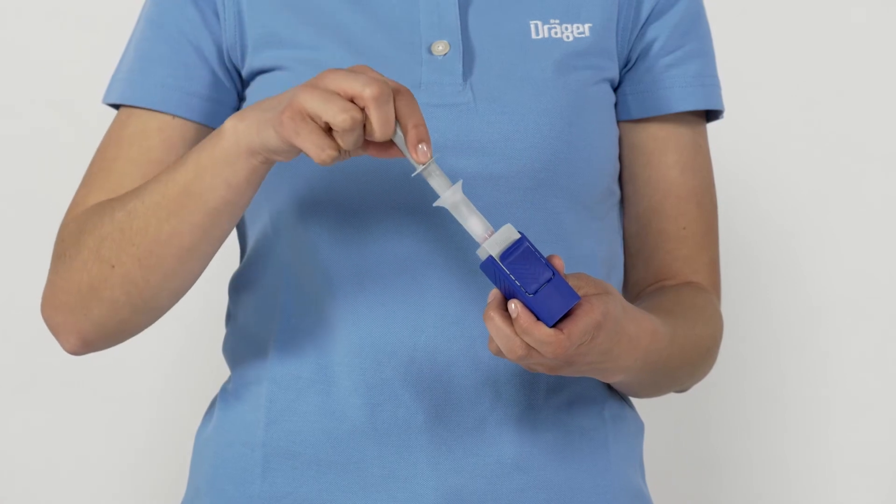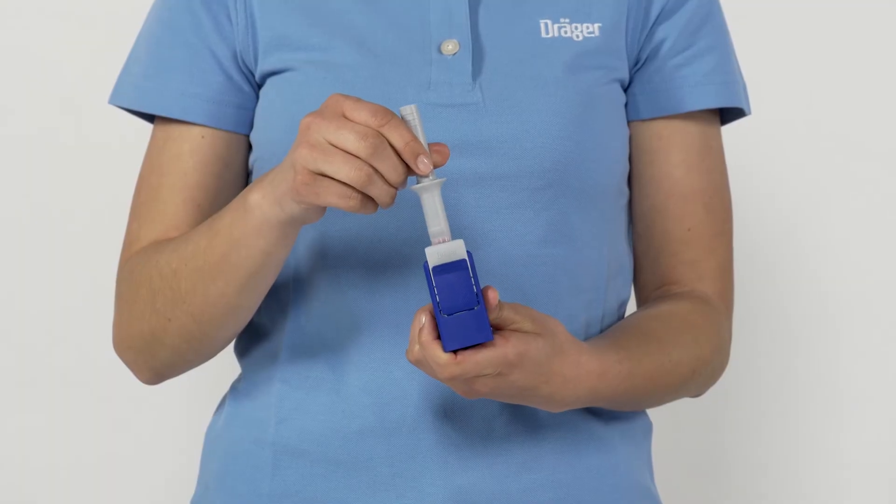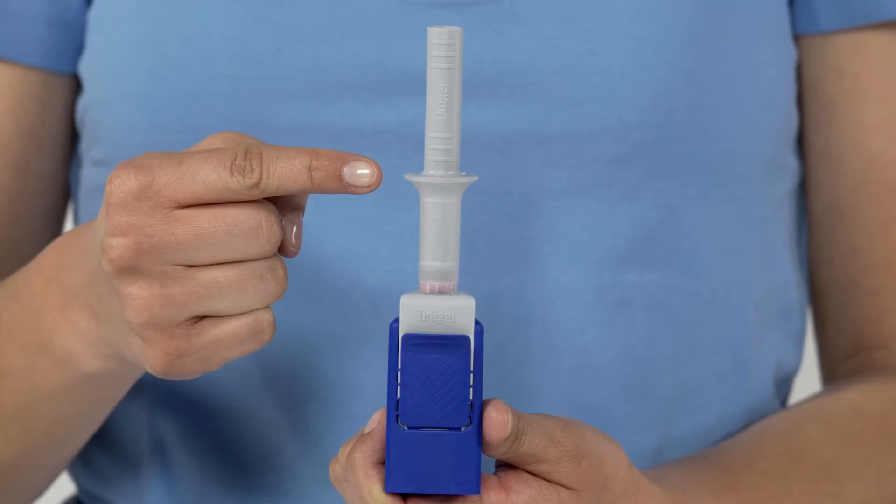Now push the sampler up to the stop into the funnel-shaped opening, so that the vial containing the buffer fluid in the test cassette breaks. There must be no gap between the sampler and the test cassette.